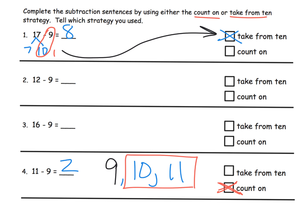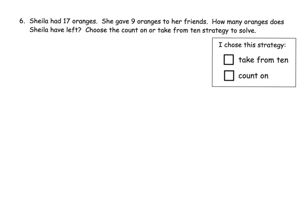We're gonna put this into practice with a word problem. It says Sheila had 17 oranges, she gave 9 oranges to her friends, how many does Sheila have left? If we wanted to write it as a number sentence, it would look like 17 minus 9 equals.